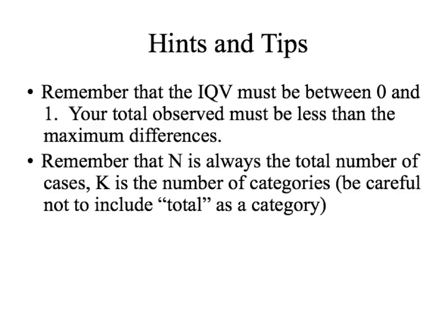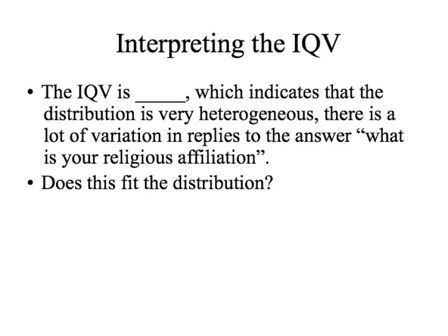To interpret the IQV, we would say: the IQV is 0.91, which indicates that the distribution is very heterogeneous — there is a lot of variation in replies to the question 'What is your religious affiliation?' This fits the distribution well. It's not completely heterogeneous because more respondents are Protestant than any other category, but every category has good representation, so it is indeed a heterogeneous distribution.